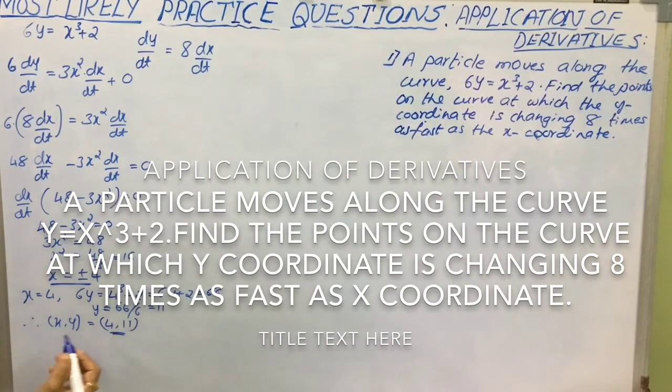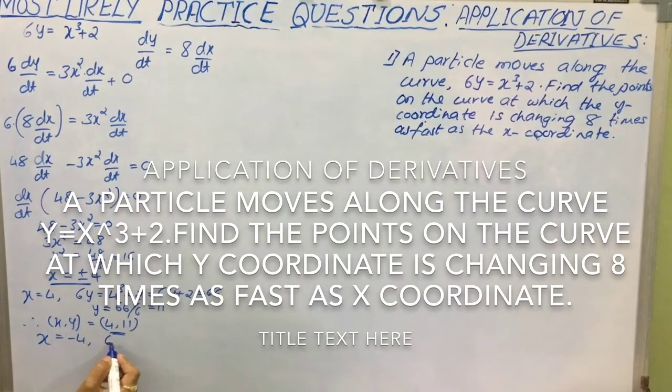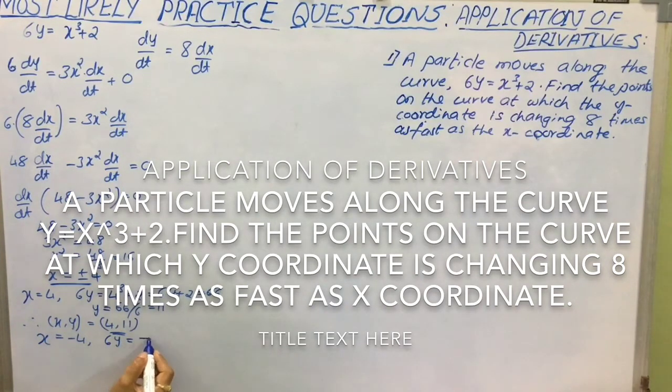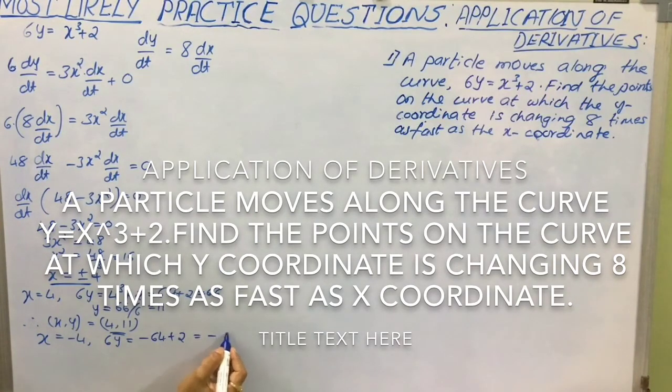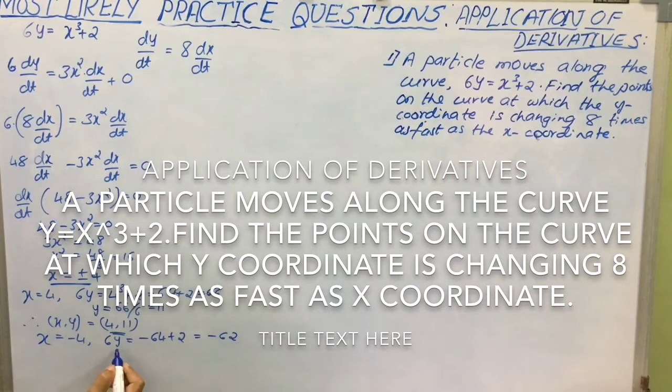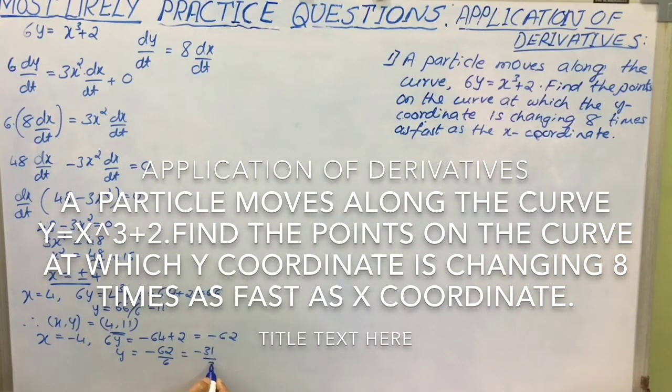Now consider x is equal to minus 4. Substituting the same expression 6y is equal to minus 4 cubed means minus 64 plus 2 equal to minus 62. So y is equal to minus 62 by 6 that is minus 31 by 3.